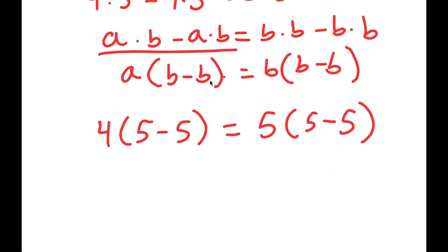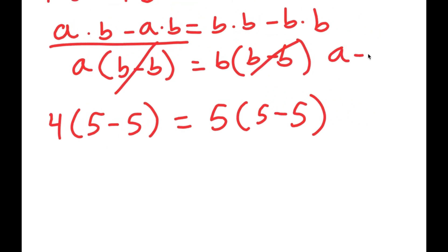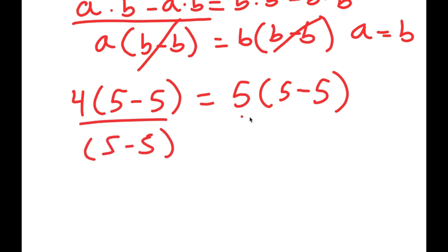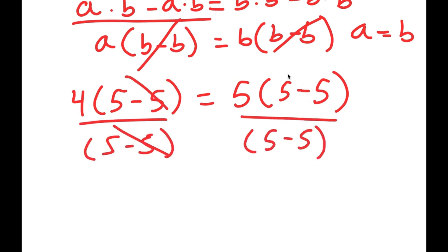Now, if I have something in the form a times (b minus b) is equal to b times (b minus b), we can just cancel these out, meaning that a is equal to b. So in this case, I have 4 times (5 minus 5) is equal to 5 times (5 minus 5). I can divide both sides by (5 minus 5), and these cancel out, leaving me with 4 is equal to 5.